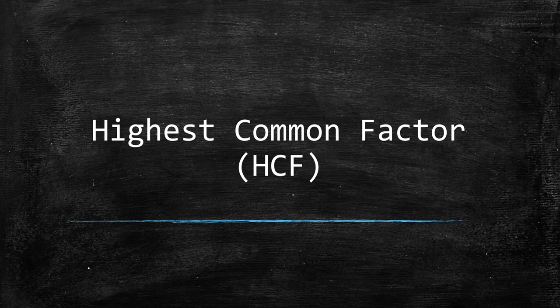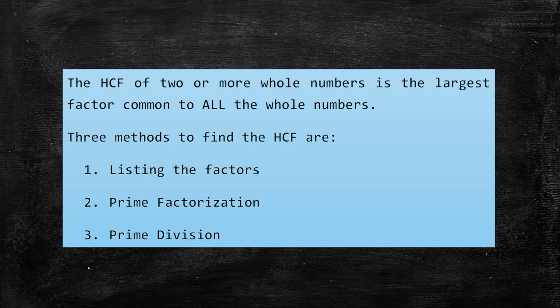Now that we've looked at some number features, let's apply that knowledge. The first application is determining the highest common factor of a list of numbers. The HCF of two or more numbers is the largest factor common to all the whole numbers. There are three methods: listing the factors, prime factorization, and prime division.